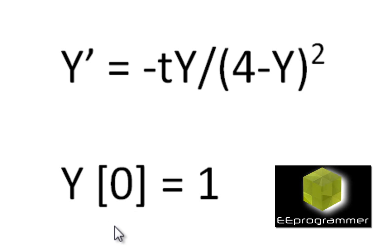People ask what is the difference between ODE23 and ODE45. Basically they are the same, except ODE45 would be more accurate, but it would be slower than ODE23.